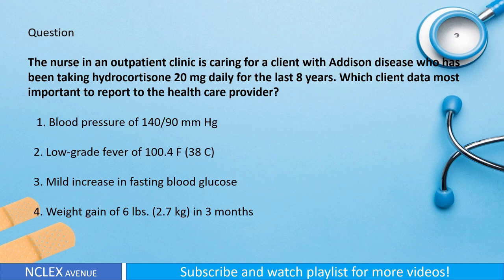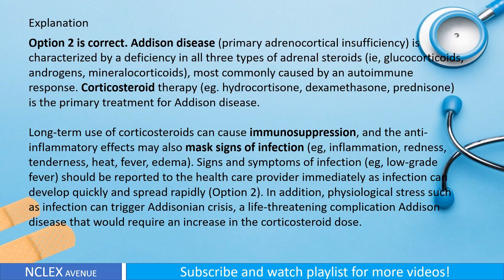Question: The nurse in an outpatient clinic is caring for a client with Addison's disease who has been taking hydrocortisone 20 milligrams daily for the last eight years. Which client data is most important to report to the health care provider? One: blood pressure of 140/90 mmHg. Two: low-grade fever of 100.4°F (38°C). Three: mild increase in fasting blood glucose. Four: weight gain of six pounds (2.7 kg) in three months. Explanation: Option two is correct.